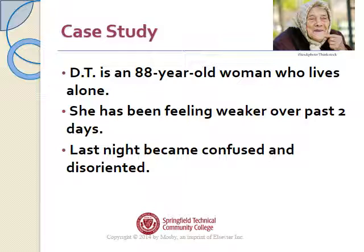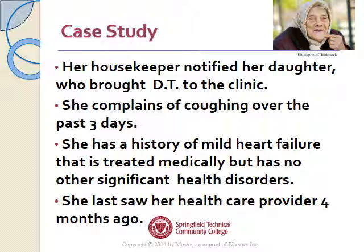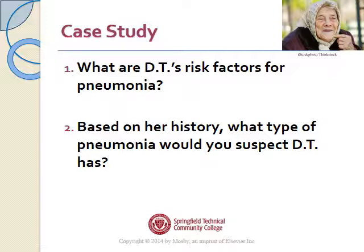Our case study is Ms. DT, an 88-year-old lady who lives alone. She's been feeling weaker over the past couple of days, and last night she became confused and disoriented. Any mental status change in your patient should prompt you to get a set of vitals including an oxygen saturation, because oftentimes the earliest sign that a patient is hypoxic is mental status changes. Her housekeeper notified her daughter who brought DT to the clinic. She complains of coughing over the past three days and has a history of mild heart failure treated medically.